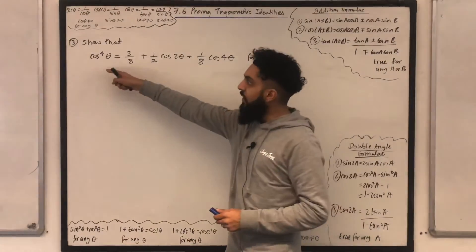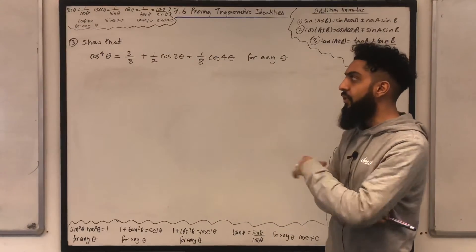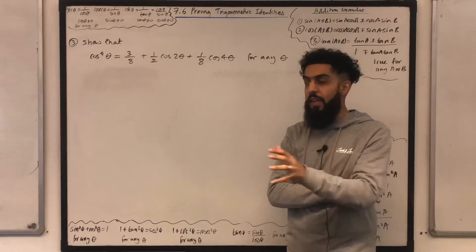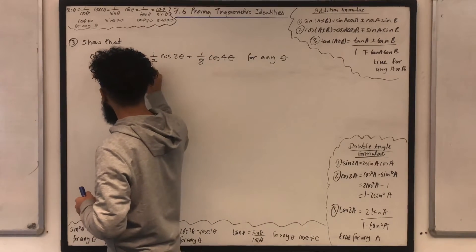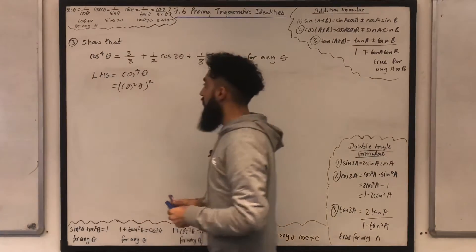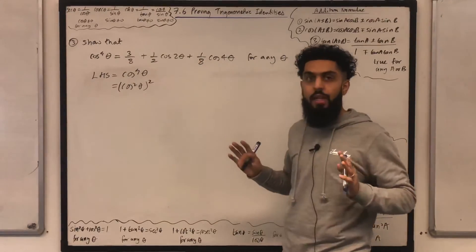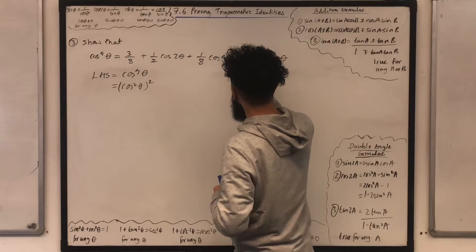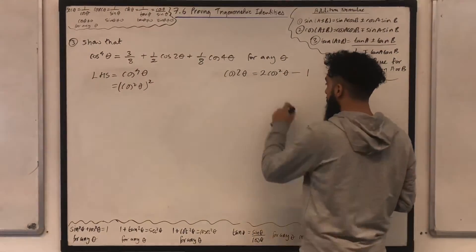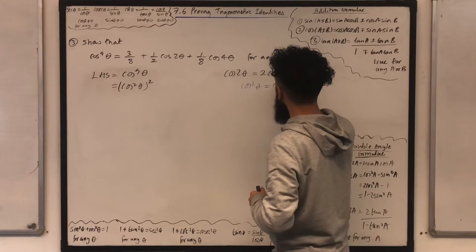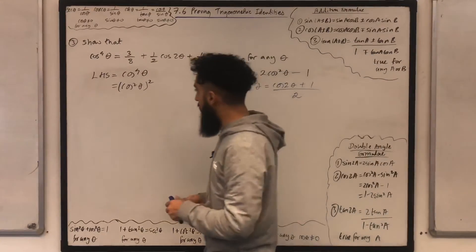Moving on to question number 3. Show that cos to the power of 4 theta equals 3 over 8 plus 1 over 2 cos 2 theta plus 1 over 8 cos 4 theta, for any theta. I'm going to use a clever method and start off from the left-hand side. I want you to take away this method from this video tutorial today. Starting from the left-hand side, I can rewrite cos to the power of 4 theta as cos squared theta, in bracket squared. What I can do next is use the double-angle formula for cos — the one that is in terms of cos only, that is cos 2 theta equals 2 cos squared theta minus 1. If I make cos squared theta the subject, I obtain cos 2 theta plus 1 all over 2. So I'm going to replace cos squared theta with cos 2 theta plus 1 all over 2.